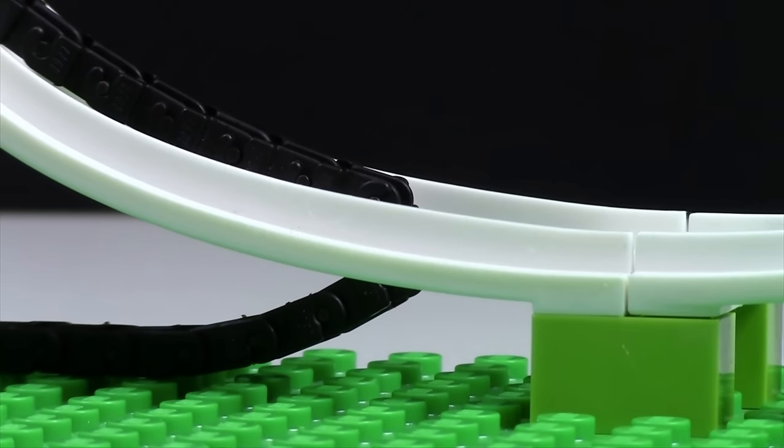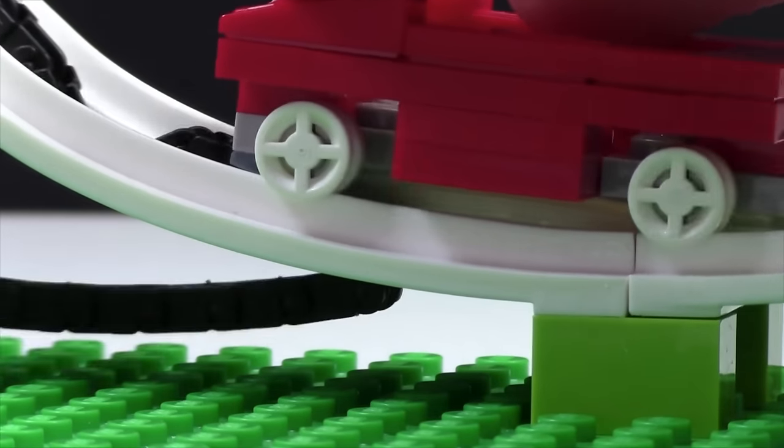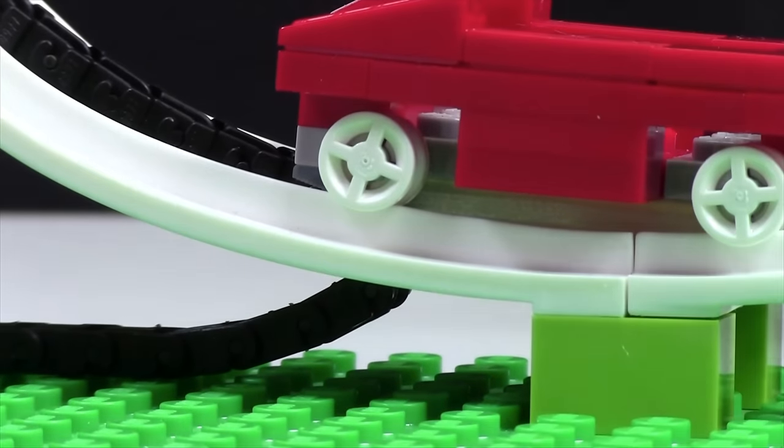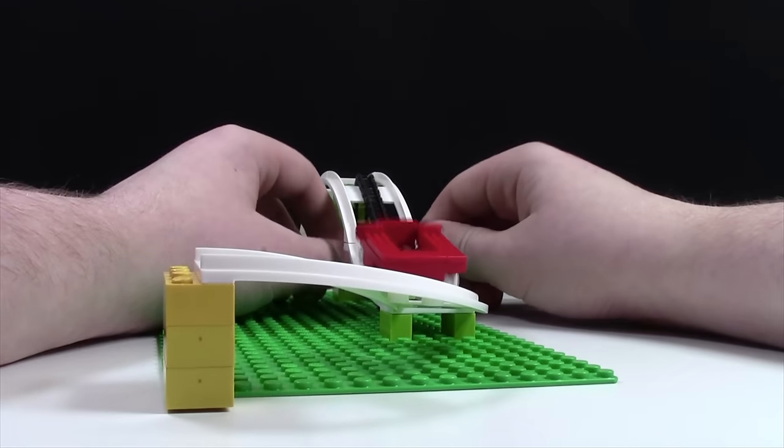So when the roller coaster comes around the turn and it interacts with the black chains, as you can see it is right on there. Now I move it back it moves the chain, I move it forward it moves the chain. What you do is you start turning the axle and up goes the roller coaster.